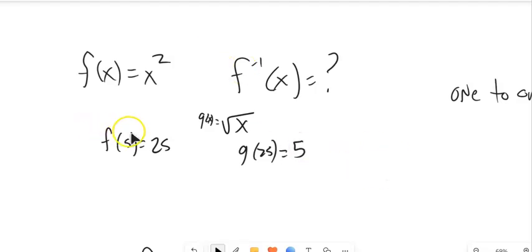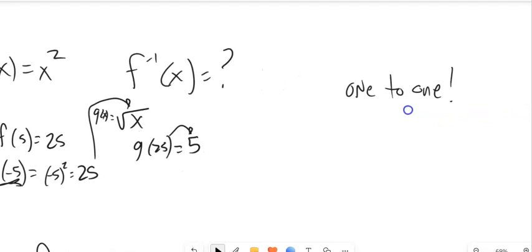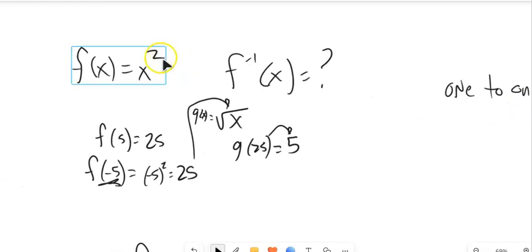But what about this? What's f of negative 5? Well, negative 5 squared is also 25. But notice if I plug 25 into this, it gives me positive 5. It doesn't give me the negative 5 back. This is not what's called a one-to-one function. And this is true of any even power.